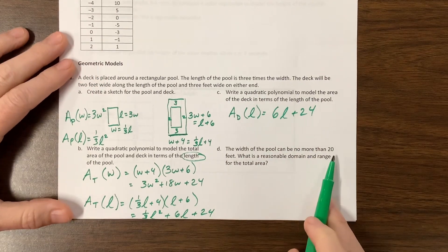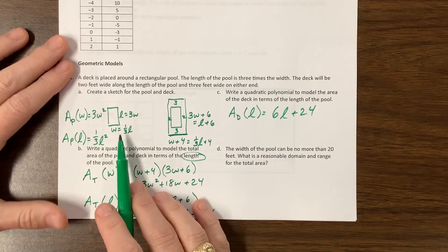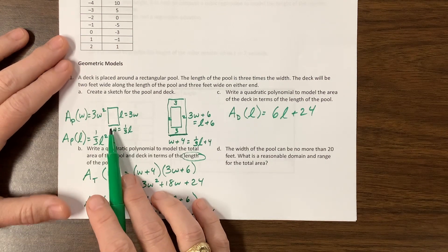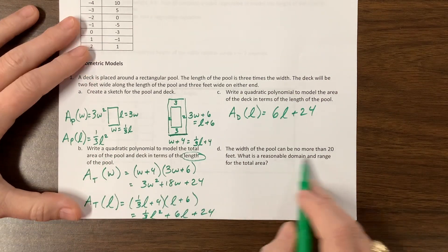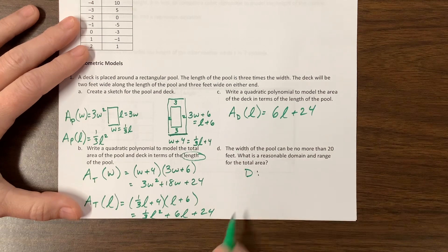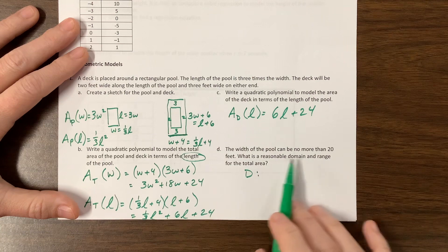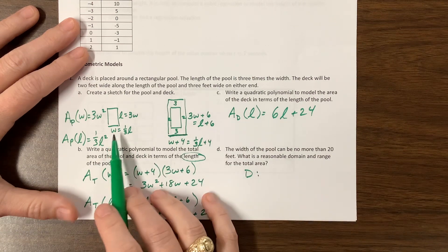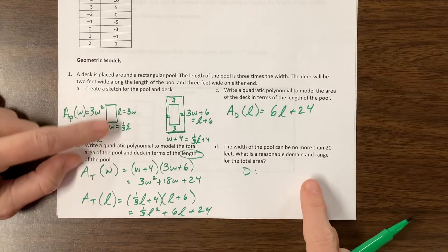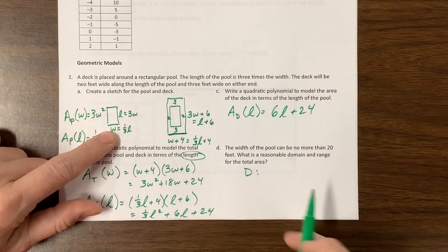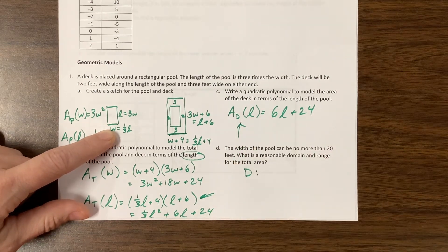The width of the pool can be no more than 20 feet. So w can be, and it doesn't make sense for it to be, I would argue it doesn't make sense to be zero, because you've done nothing if you have a pool with zero. But a reasonable domain, the domain of the area function is going to be, well, it depends on if we're talking in terms of w or in terms of l.